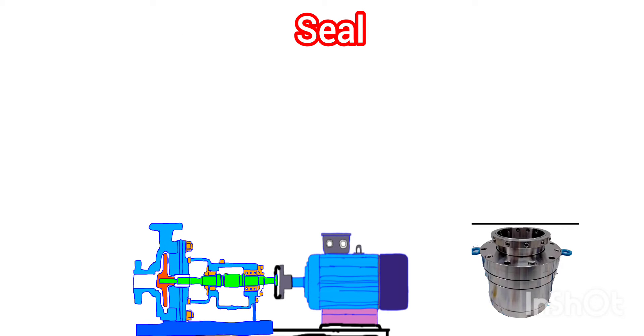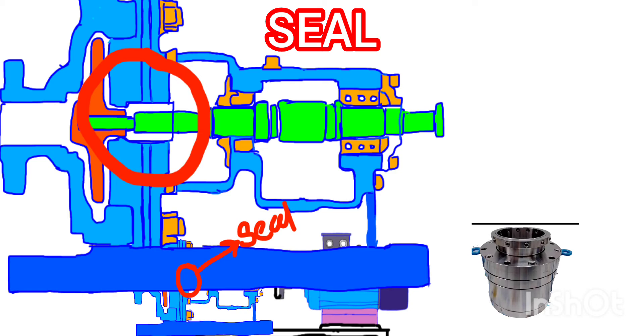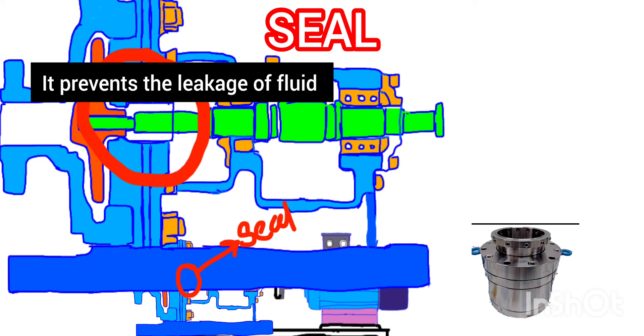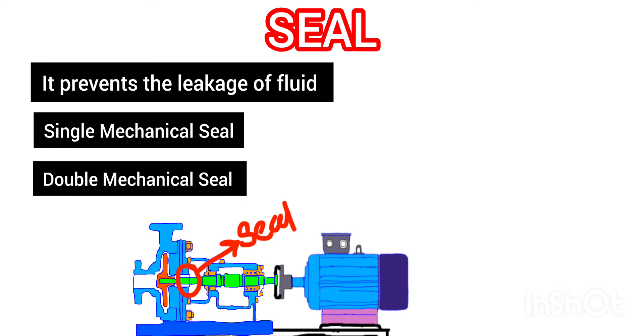The next component is the seal. You can see the image of the seal — it is a mechanical device. It prevents leakage from inside the casing or pump at the point where the shaft enters the casing. It has several types: single mechanical seal, double mechanical seal, and gland-type seal.